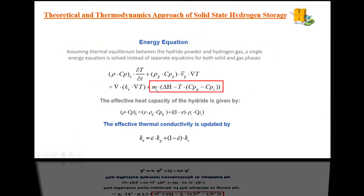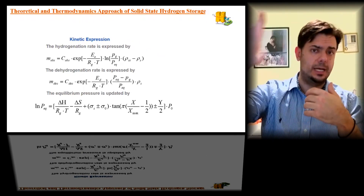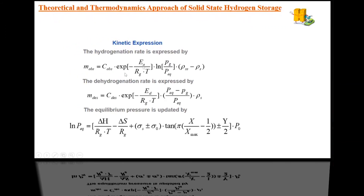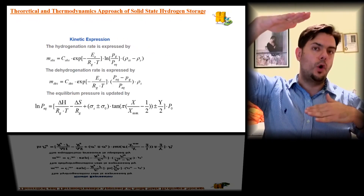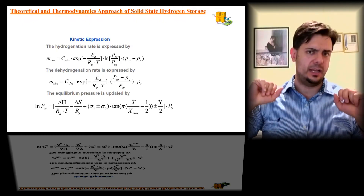Darcy's law describes the diffusion of a gas through a porous material. Neglecting gravitational effects, the gas velocity is given by the permeability and the pressure gradient. There is a kinetic factor m in both equations — we must extract the kinetic effect from the models to verify the kinetic expression. The hydrogenation rate is expressed by an Arrhenius-based equation: a constant rate times the exponential of activation energy over R (8.314 J/mol·K) times temperature, multiplied by the logarithm of the gas pressure to the equilibrium pressure.